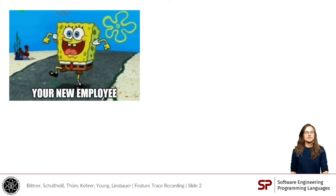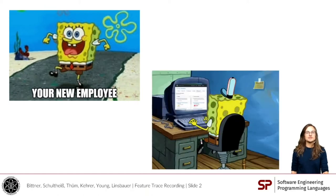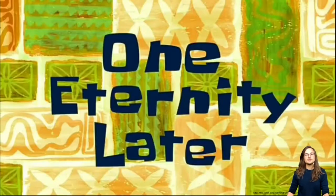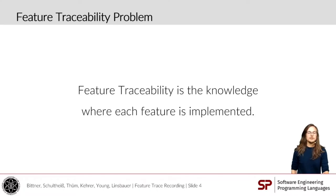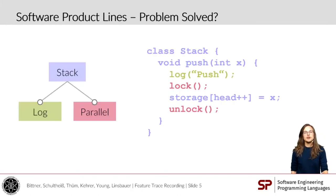Consider you run a company and you have a new employee who is highly motivated and wants to get started, so you give him a new task and he starts digging into the code base. But it takes forever for him to solve this issue, and soon both of you realize he spent most of his time searching for the code he is about to change but couldn't find it. This is known as the Feature Traceability Problem, where Feature Traceability is the knowledge of where each feature is implemented in the code base. And this problem is mostly solved in software product lines.